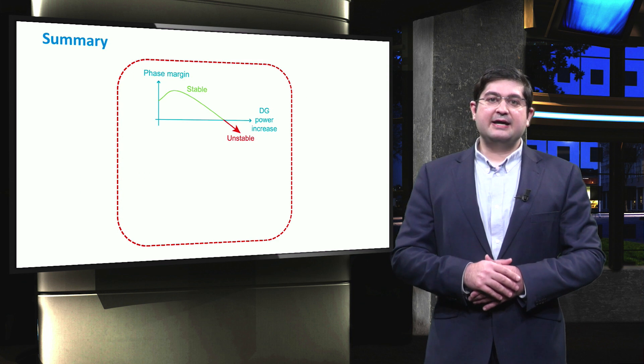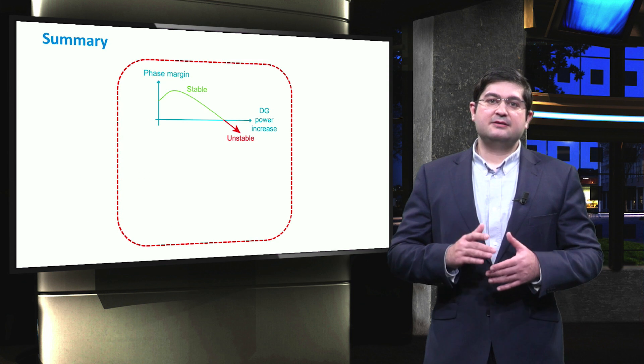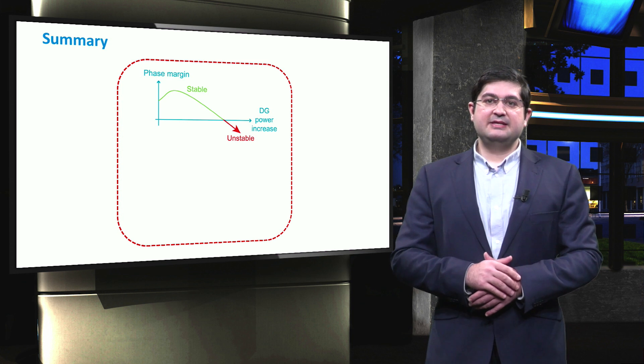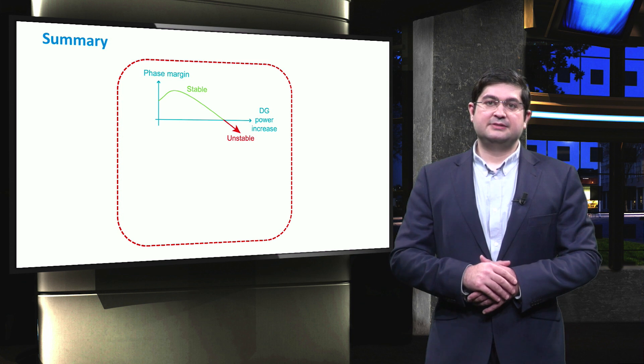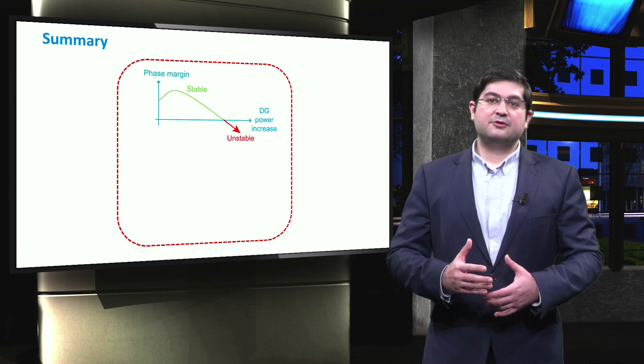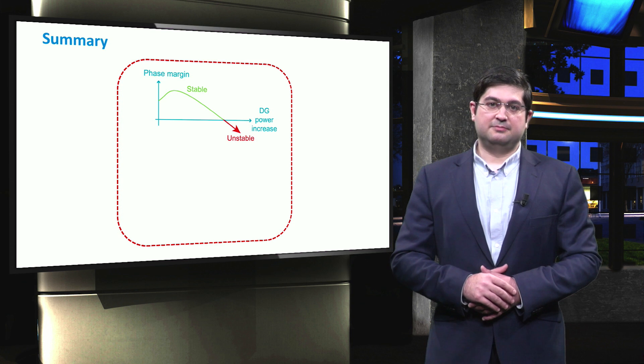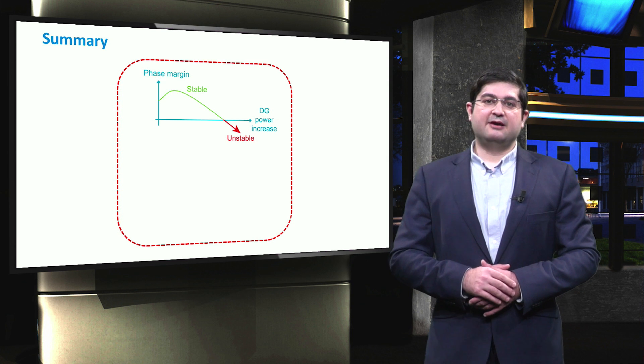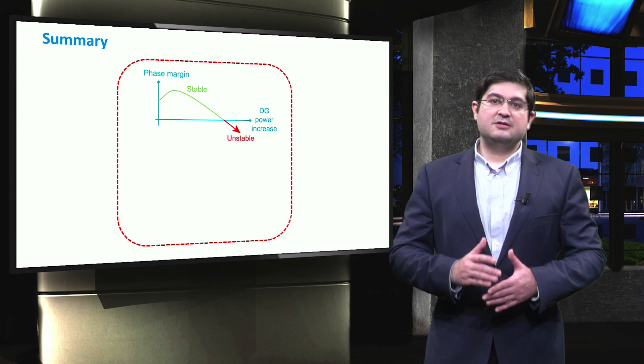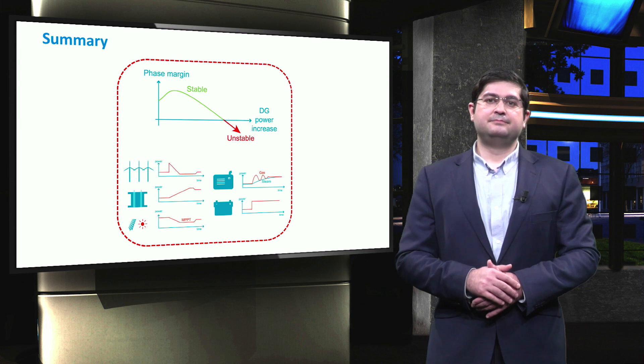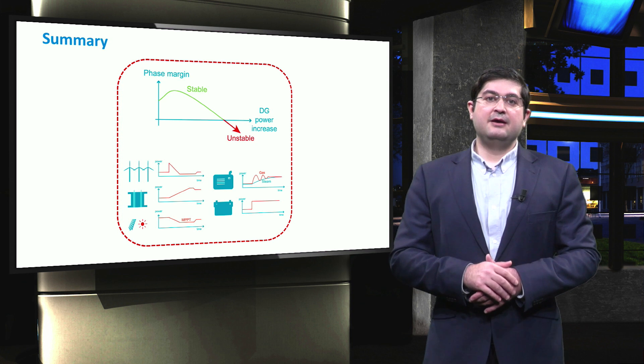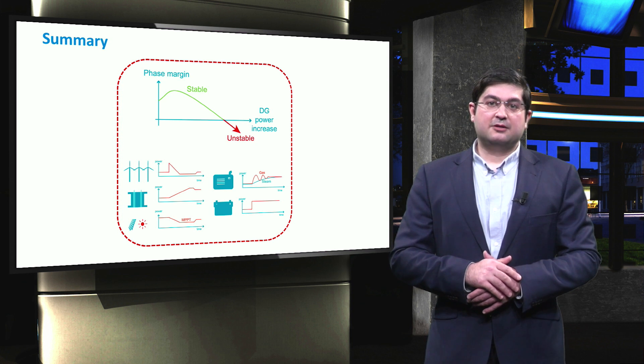So, in this video, we addressed first the stability classification of traditional power systems, and then we detailed the stability of microgrids. We mentioned that while the voltage stability is the main issue for microgrids during grid-connected mode, both frequency and voltage stability are to be addressed in microgrids during islanded operation.